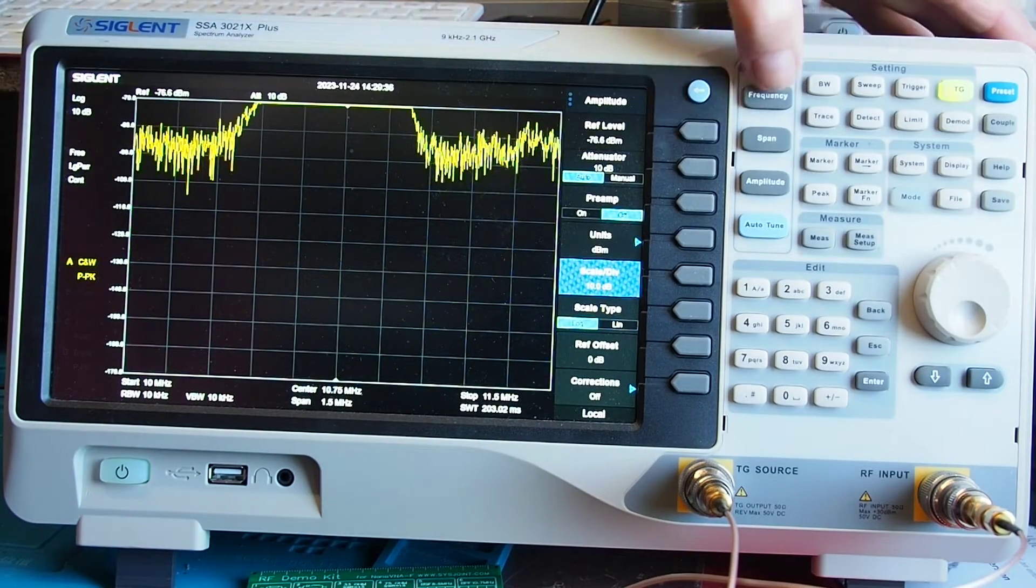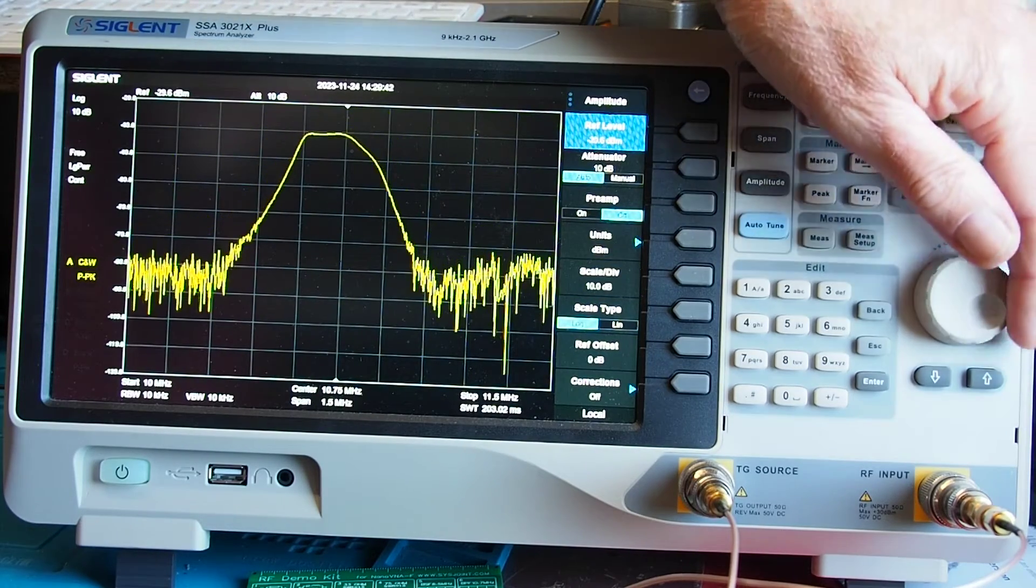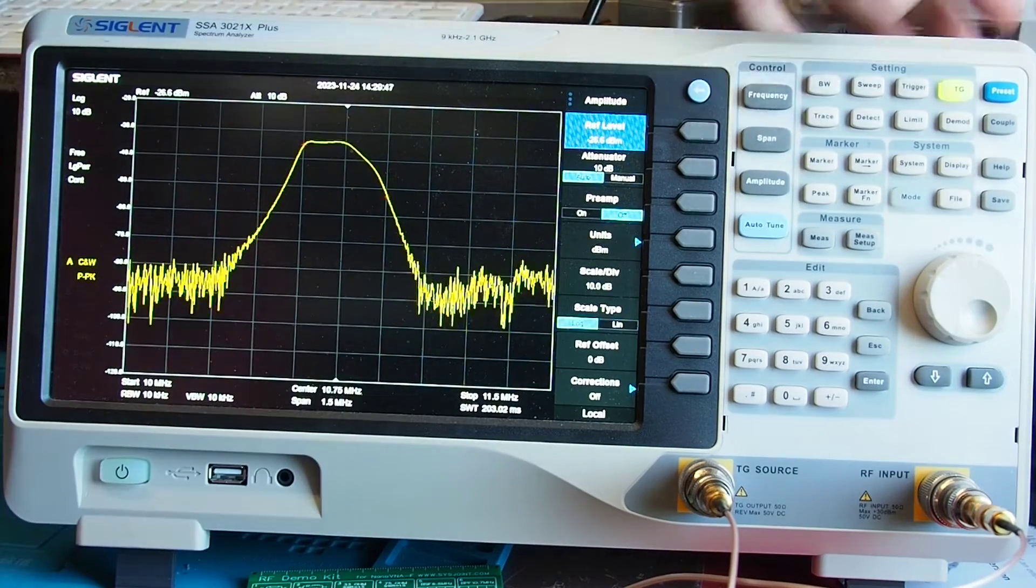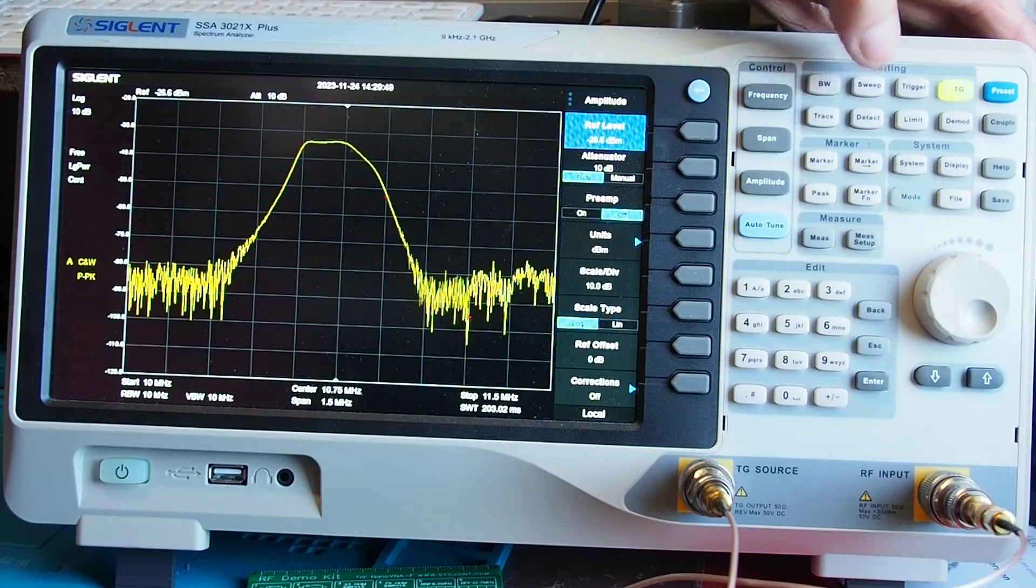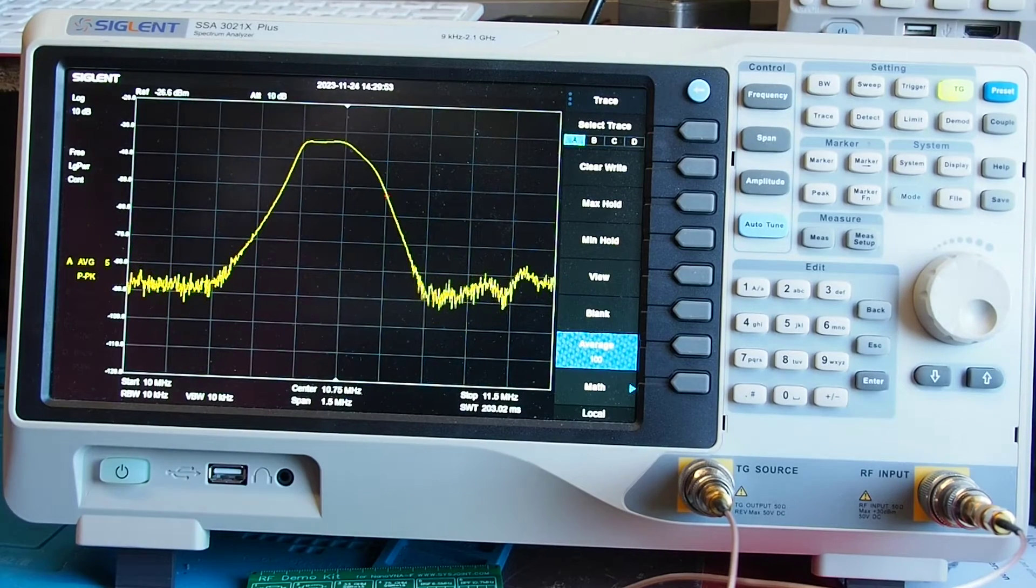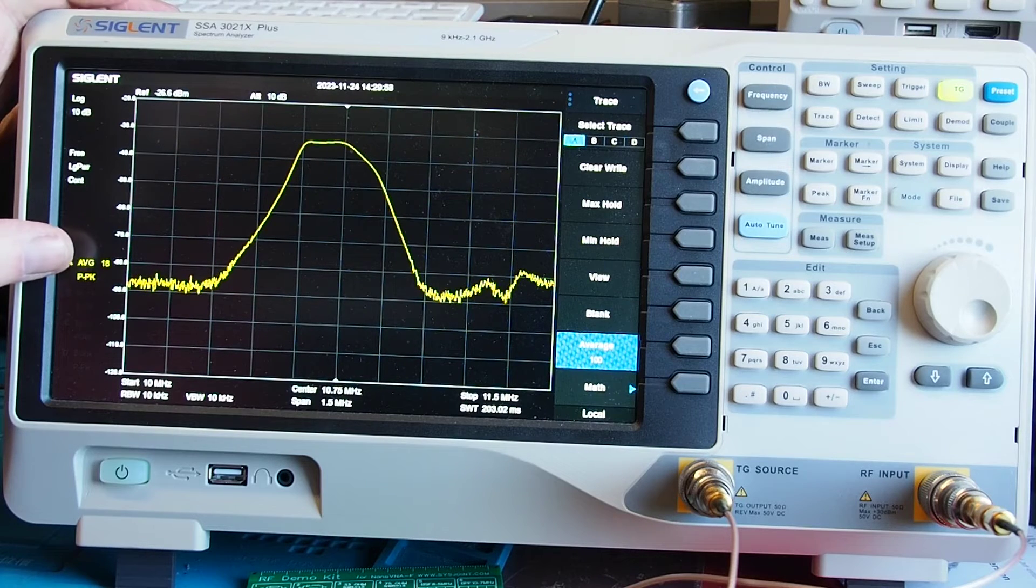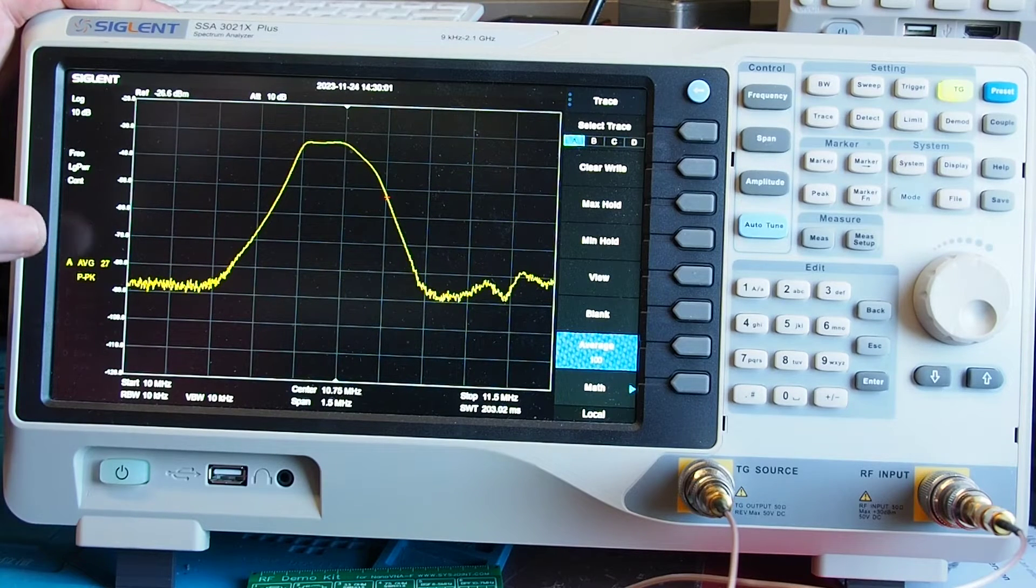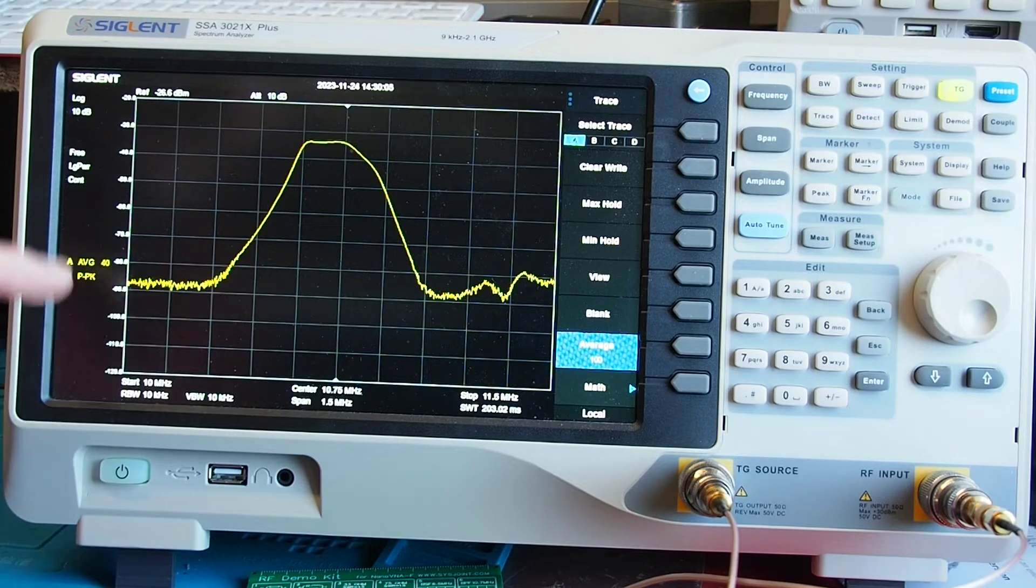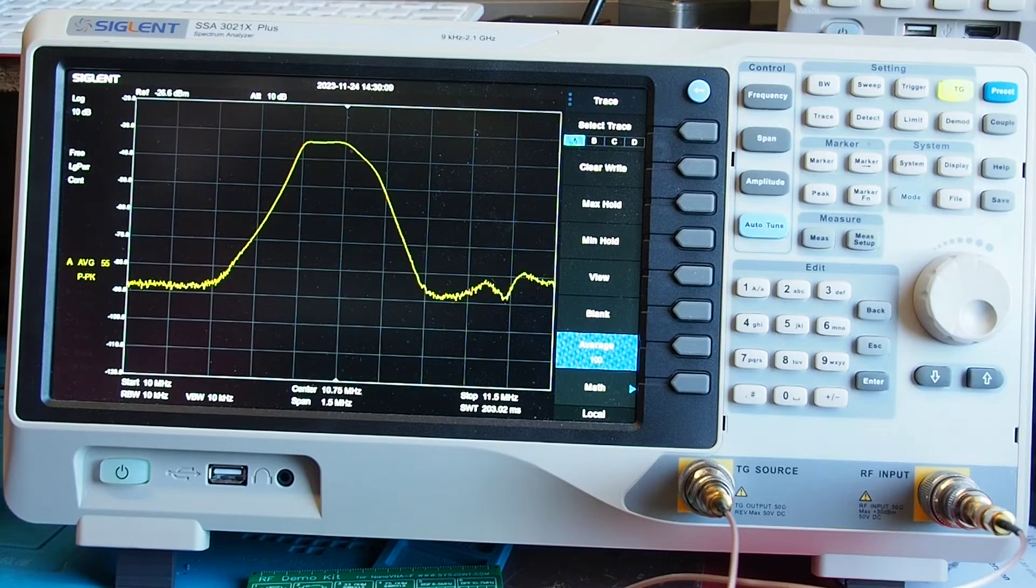Now if you want to have a good look at these corners we can still use the feature that we used yesterday which is to go to trace and is to pick average of 100 and as it averages away there it's just done 15 sweeps now slowly but surely you start to get a display that gives you an easier to view idea of what's going on at the on the skirts of the filter.